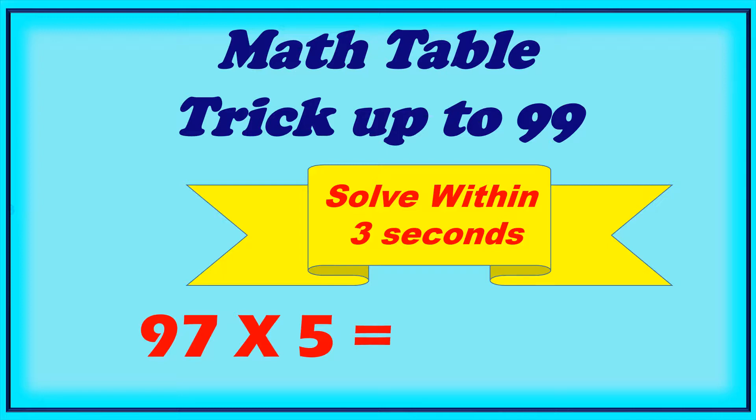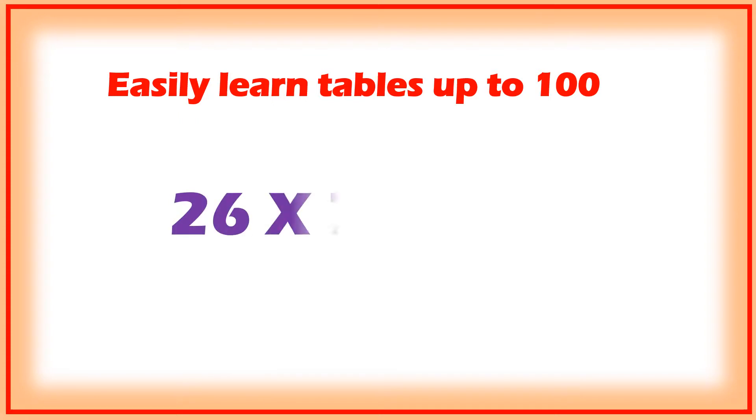97 into 5 is equal to 485. You can also do it very easily. I will show you, I will teach you in the next slides. Easily learn tables up to 100.